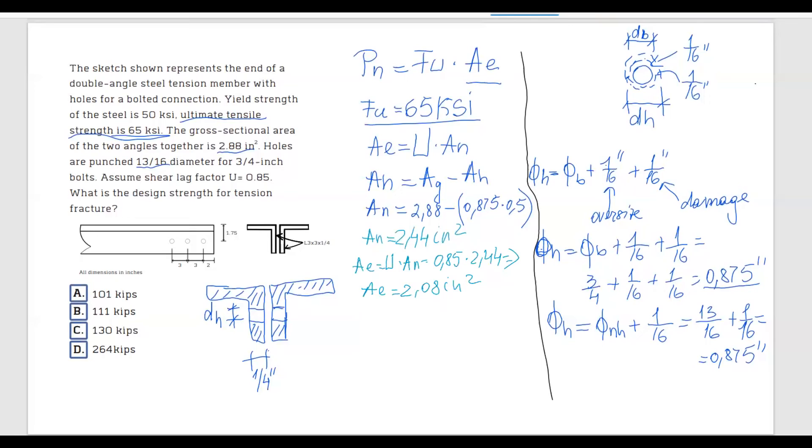And now that we have the effective area, we can calculate the nominal strength. So the nominal strength is going to be equal to FU, ultimate tensile strength, which is given in the problem, 65 ksi multiplied by AE, which is 2.08. And we get 134.9 kips.